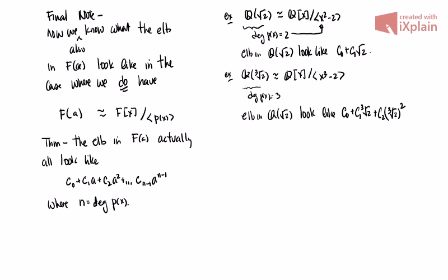This doesn't apply in the Z₅ case in the same way — again, just to reiterate, there's no obvious extension to name things by, so writing 'Z₅(something)' is meaningless without that bigger extension field. With that, I'll pause — I think I've rambled for about 50 minutes now. Hopefully some of these ideas help you understand what's going on with field extensions.